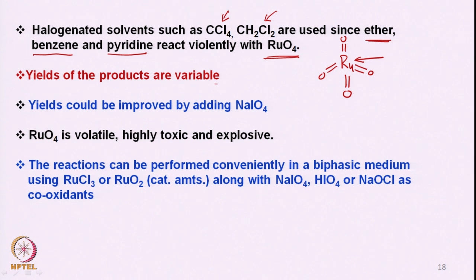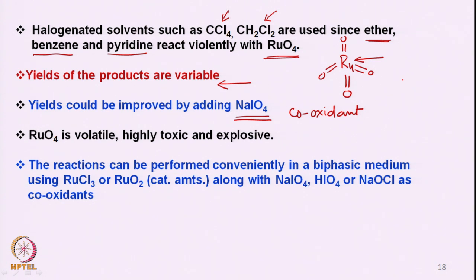Unfortunately the yields of products are variable depending on the substrate. However, it has been found that if one adds sodium metaperiodate as a co-oxidant, yields can be improved. Ruthenium tetroxide oxidizes or cleaves a double bond and gets reduced to a low-valent ruthenium species, which can then be re-oxidized using sodium metaperiodate — this is where the efficiency of the reagent increases.